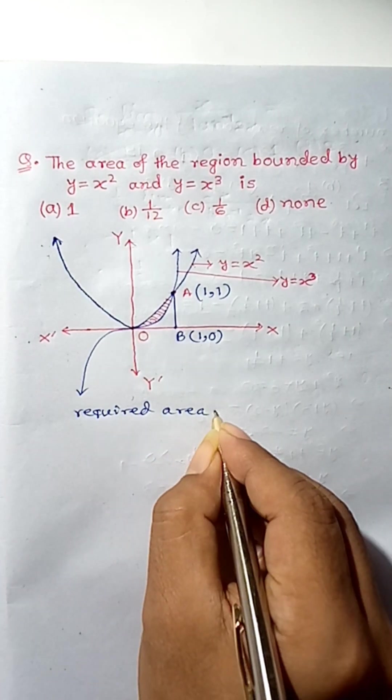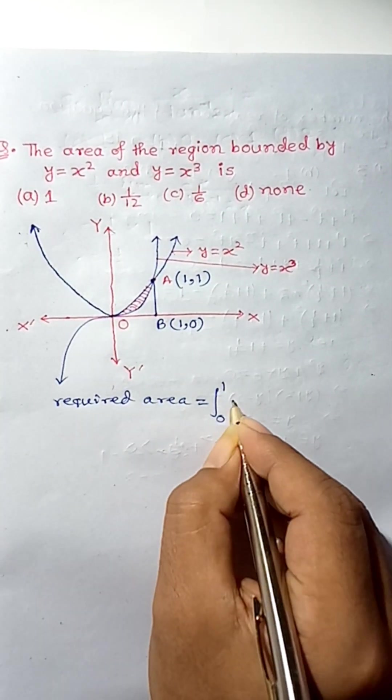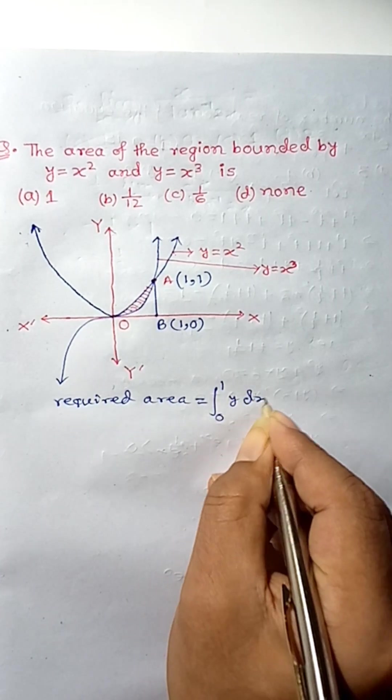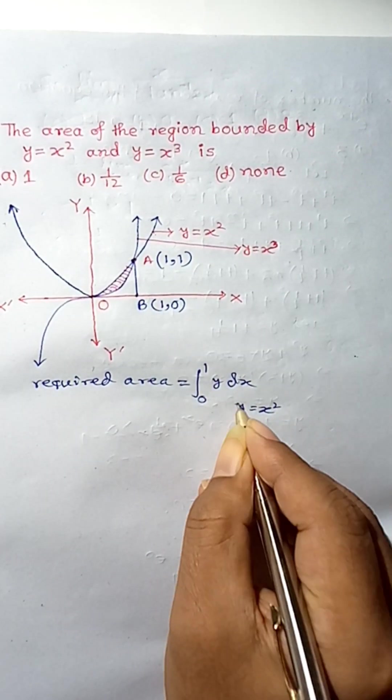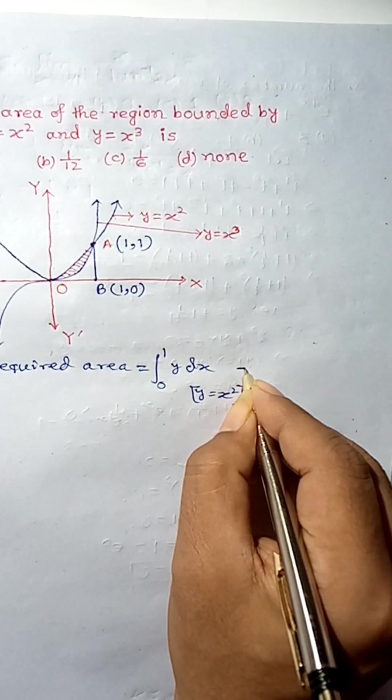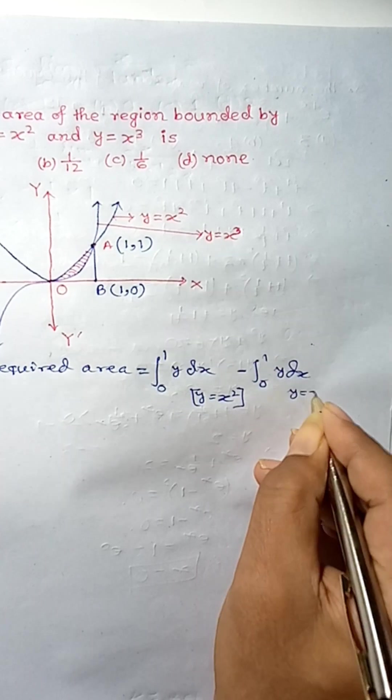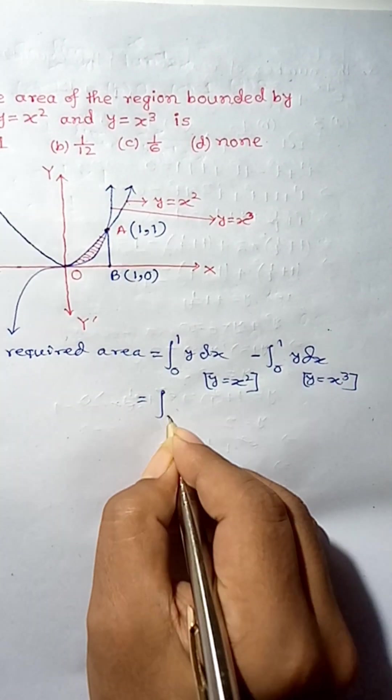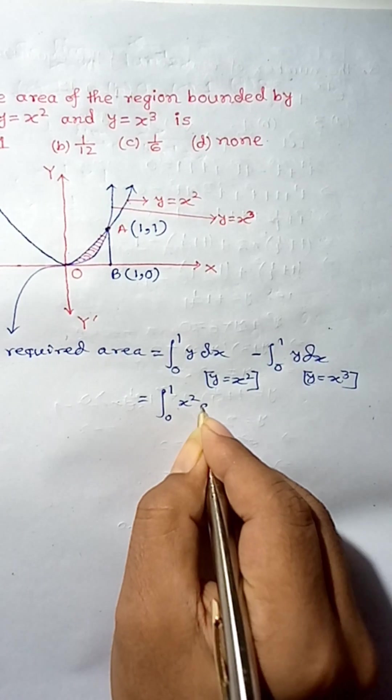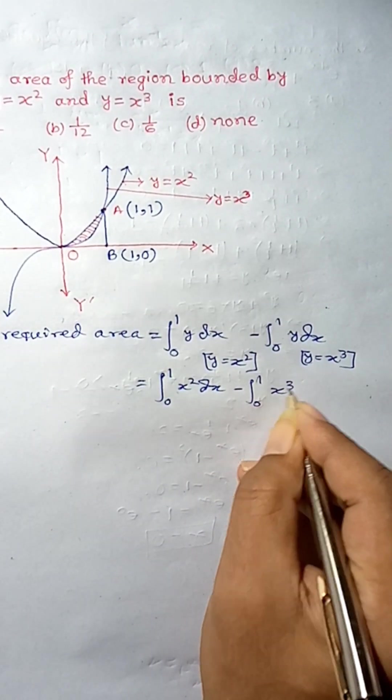Therefore, the required area is going to be integration 0 to 1 y dx where y is equal to x squared minus integration 0 to 1 y dx. Now, here, y equal to x cubed. So, this is going to be 0 to 1 x squared dx minus 0 to 1 x cubed dx.